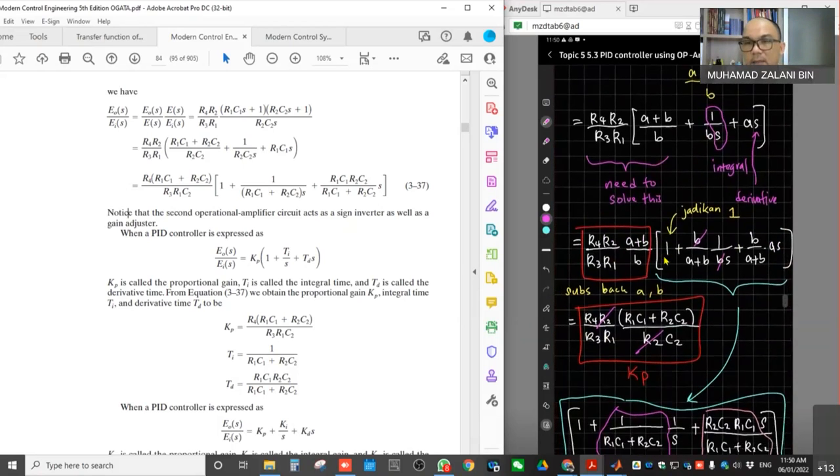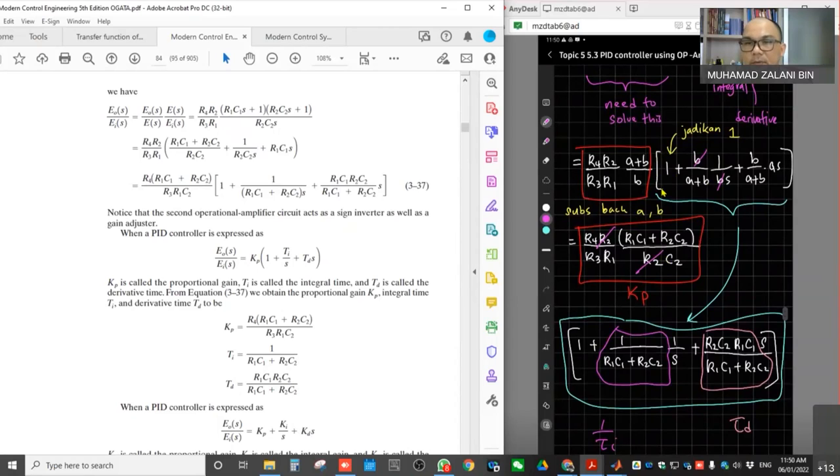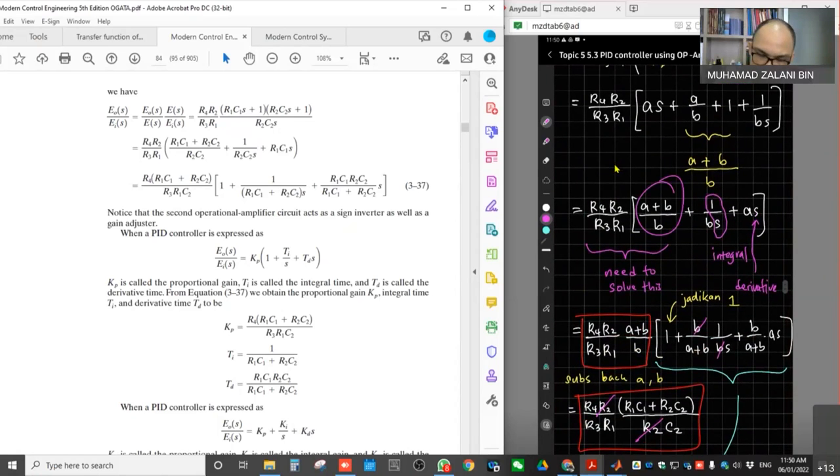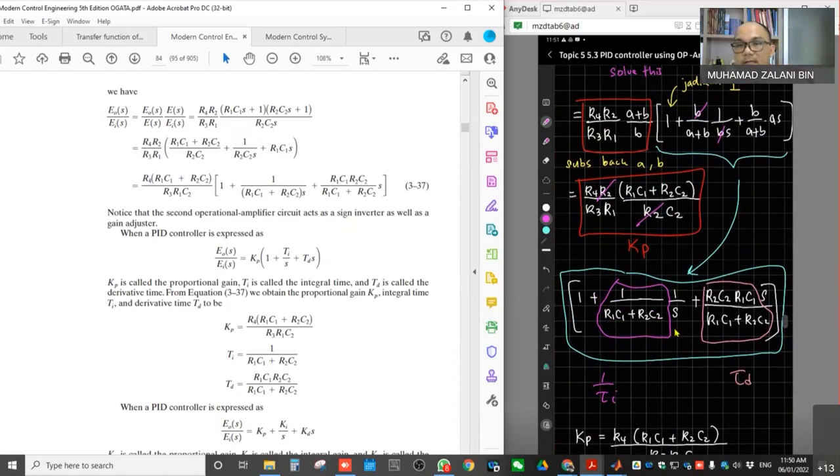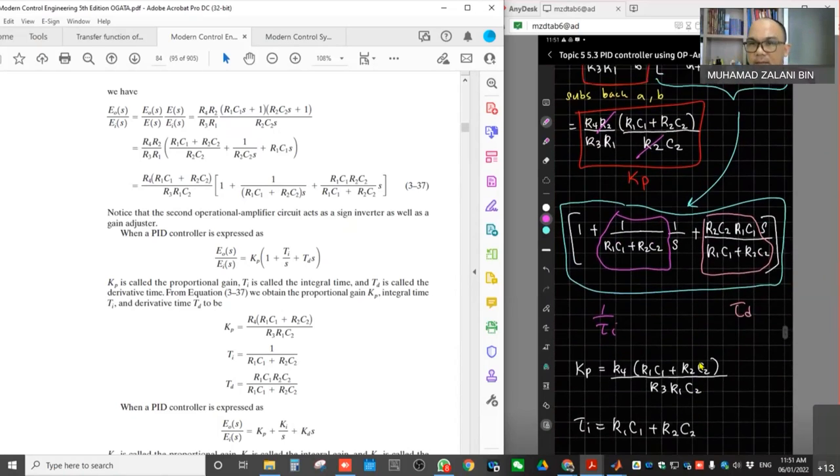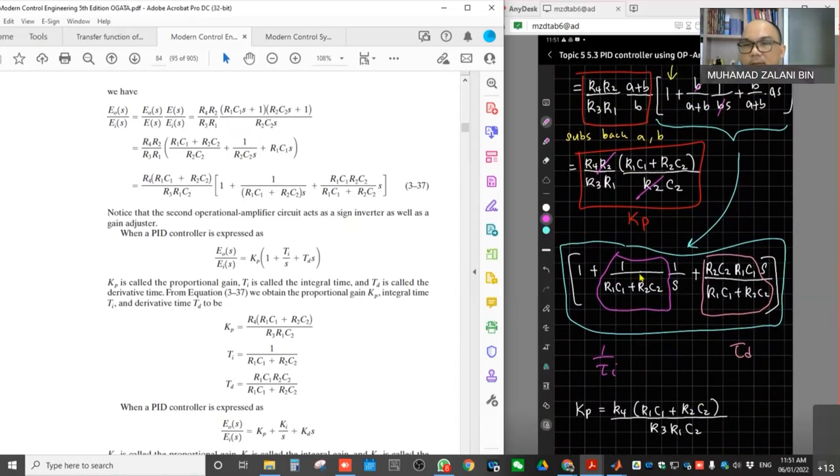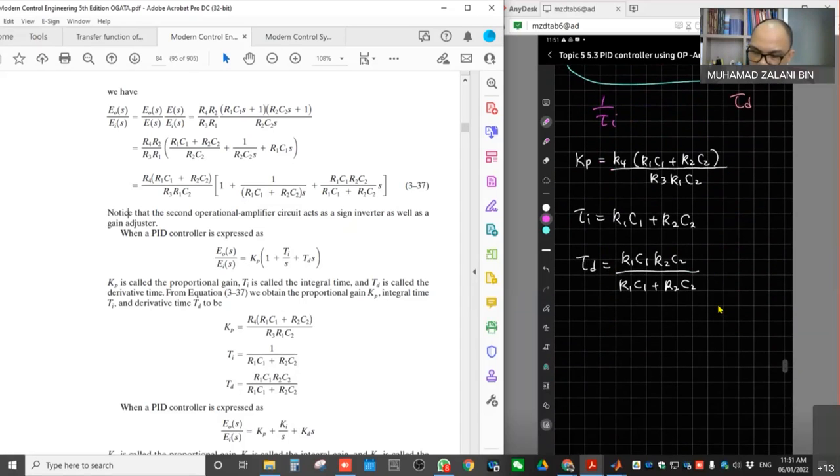Next, we want to make this unity. What we do is take out A plus B. Take it outside so this part becomes unity. And proceed until finally we get these parts - KP outside, then inside there's 1 over TI and then TD. So further simplify until we get this.